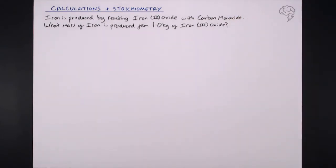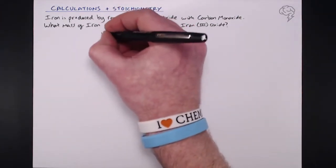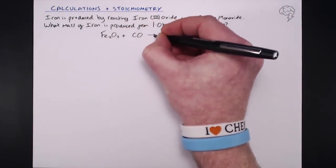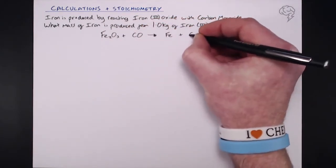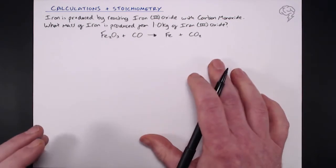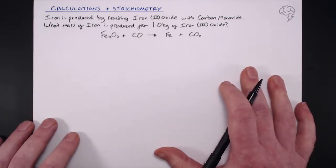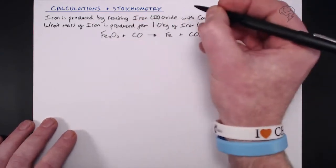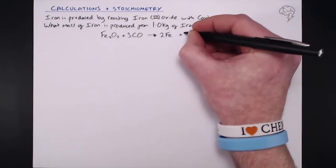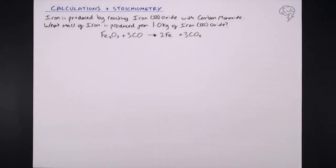Before we start, we need a balanced equation. In an exam question, they may give you the equation and ask you to balance it, or they may just give you the balanced equation. Either way, you need that balanced equation to move forward. We know that iron three oxide, Fe2O3, reacts with carbon monoxide to produce iron and carbon dioxide. Balancing gives us: Fe2O3 + 3CO → 2Fe + 3CO2.